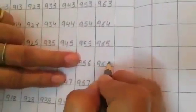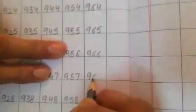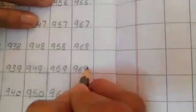966, 967, 968, 969. What comes after 969? 970.